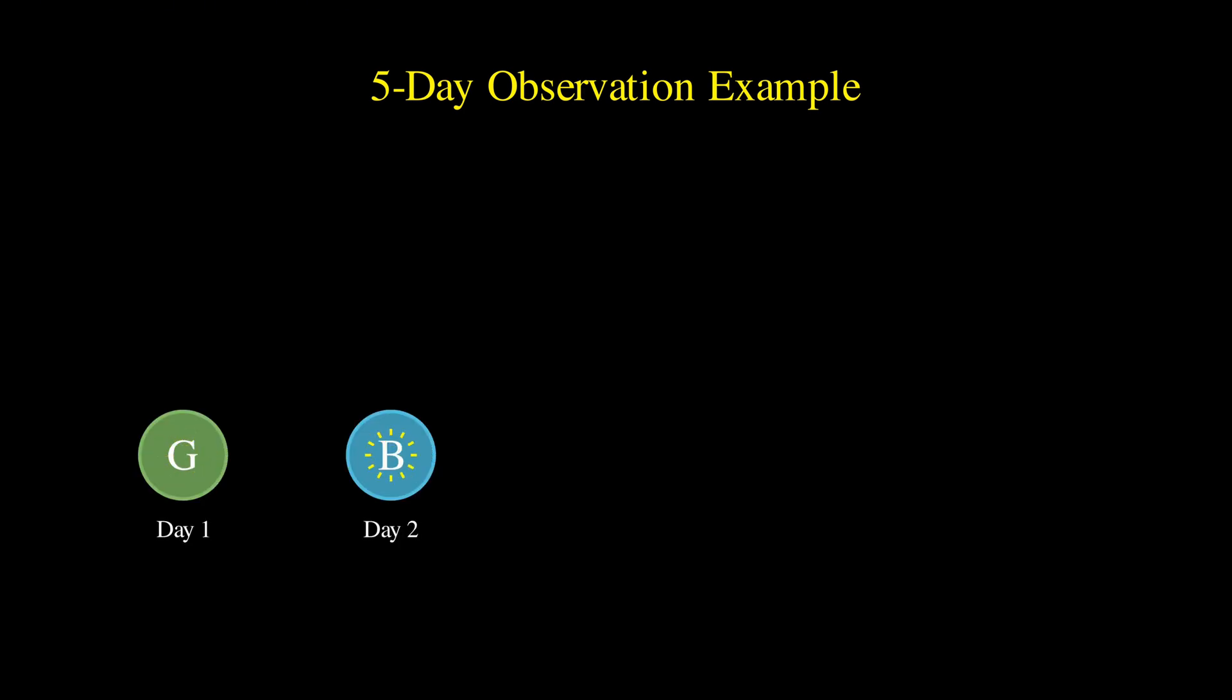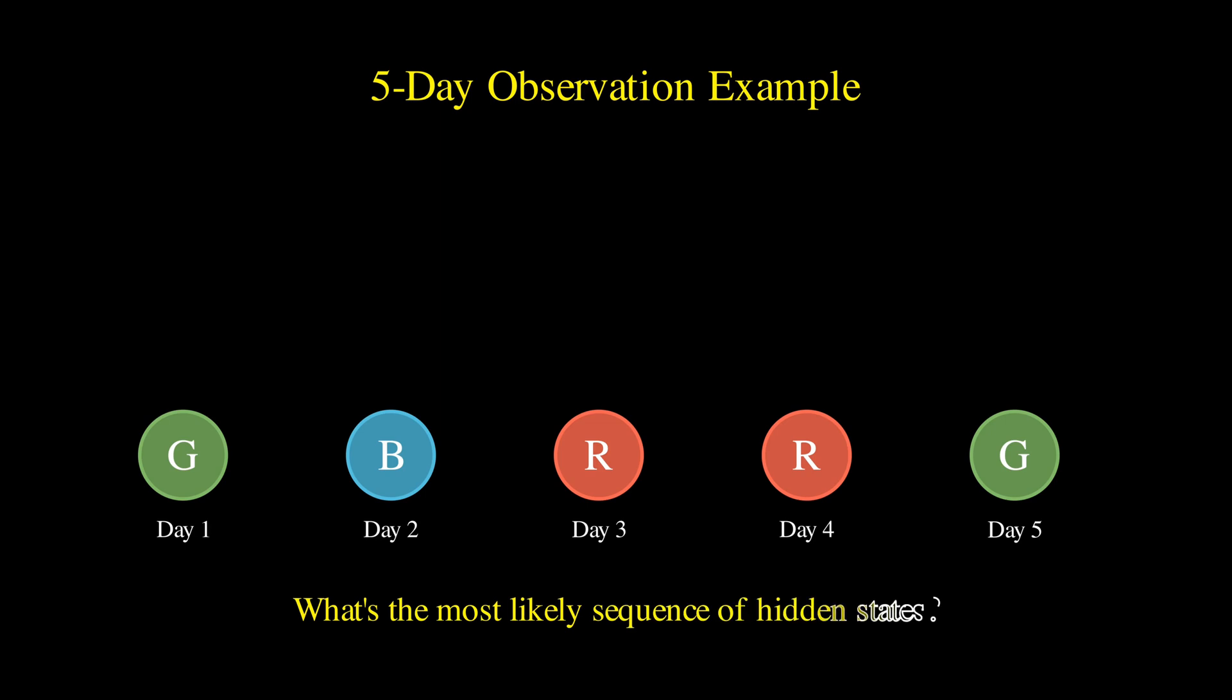Finally, let's consider a 5-day observation example. Imagine you observe this sequence: green, blue, red, red, and green again. The question now becomes, what was the most likely sequence of hidden states, sad or happy, that could have generated these observations?